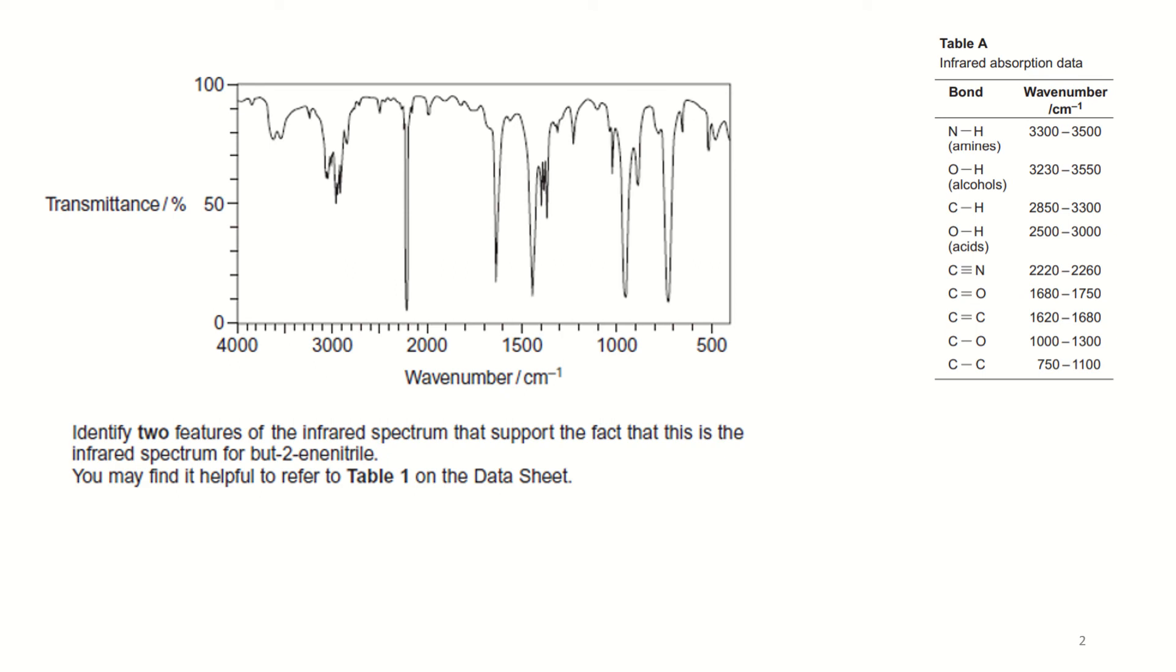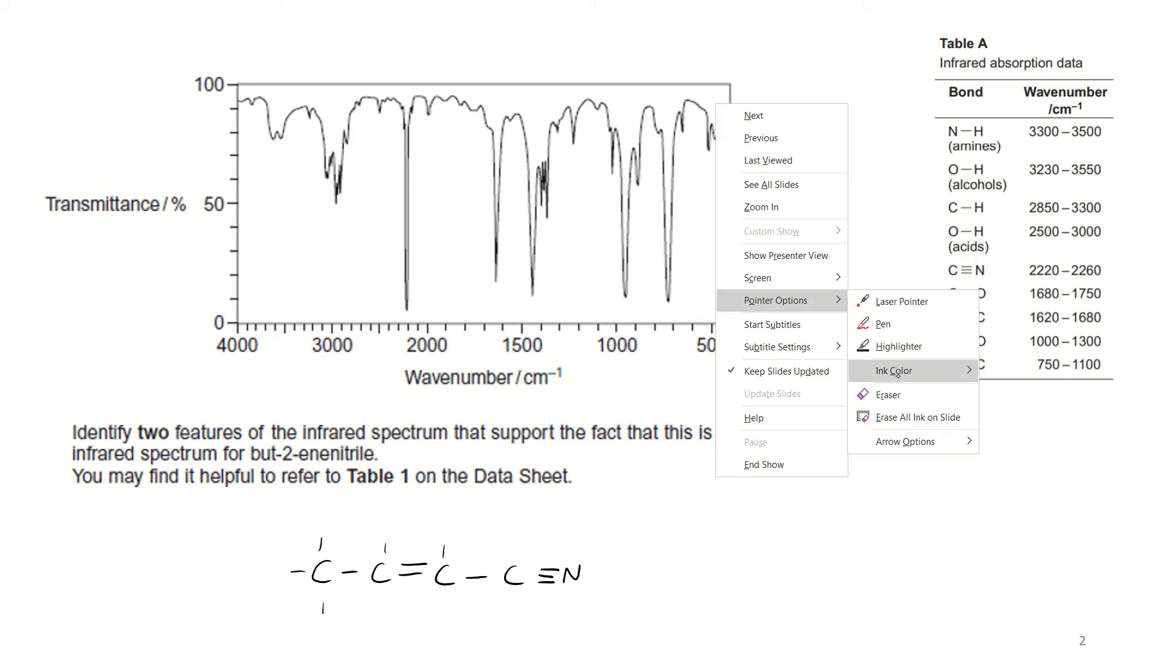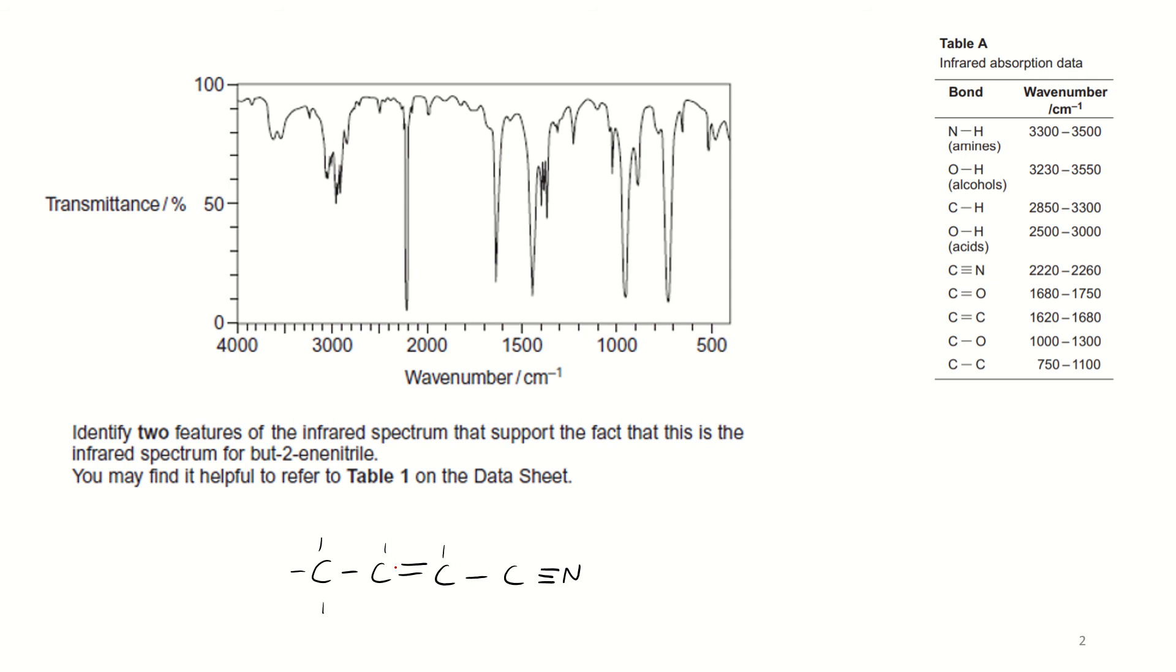Now two features that support this is but-2-ene nitrile. First off, draw the molecule out again. So characteristic bonds we're looking for, the alkyne and the nitrile. The alkyne, we can see, we're looking 1620 to 1680, and the nitrile, 2220 to 2260.